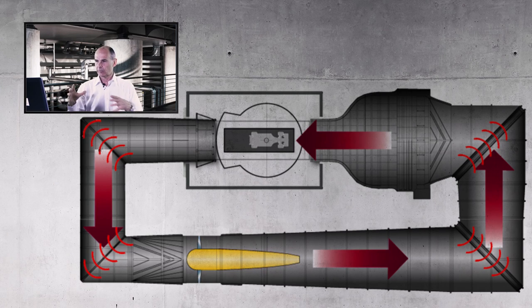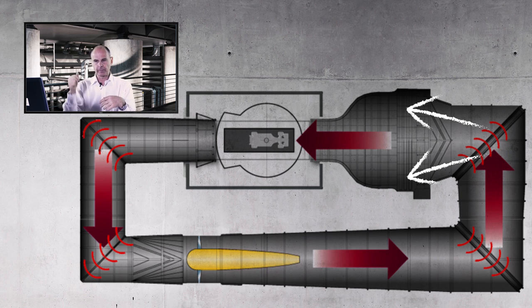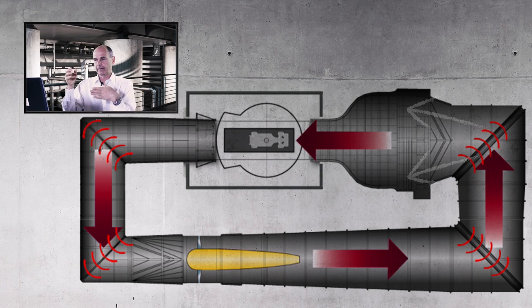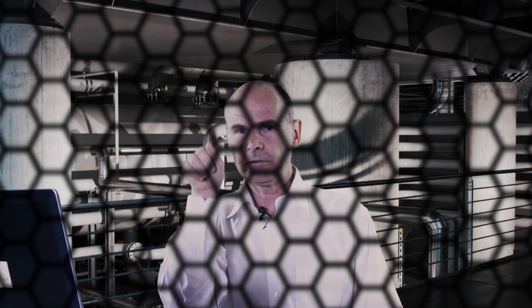When we get round to the last leg before the working section, we have what is called a settling chamber. As the air passes into the settling chamber, we expand it reasonably quickly. We then have a blockage caused by—in some wind tunnels it's the radiator, but we have a radiator and then, separated from that, a honeycomb.